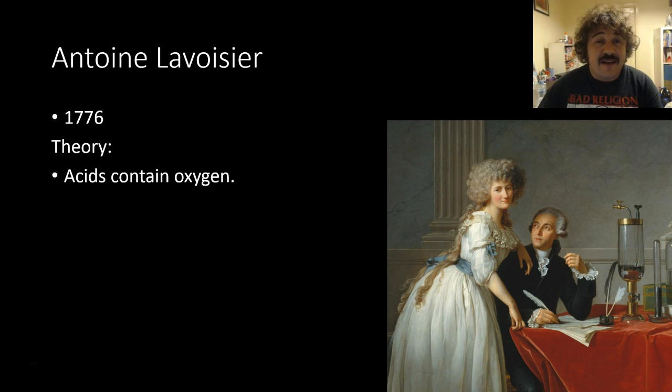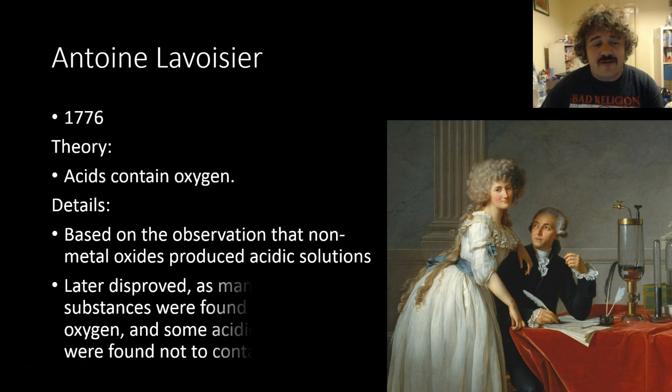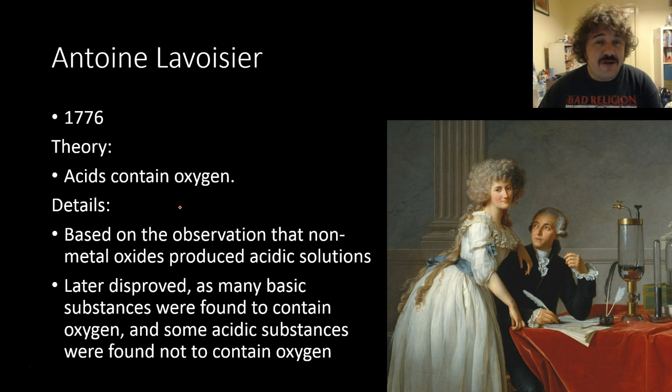In other words all of the observations and evidence supported this idea at the time. He came up with the theory that acids contain oxygen. Now this is based on basically the observation that non-metal oxides produce acidic solutions. So an oxide of non-metals will give you an acidic oxide. But later it was shown to be not true when many basic substances had oxygen in it and there were some acidic substances for example hydrochloric acid which do not have oxygen in them.